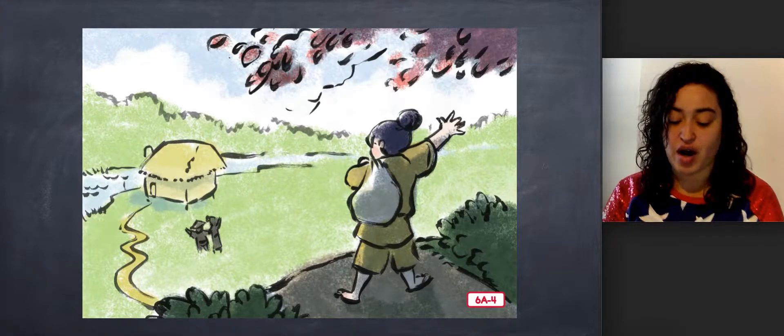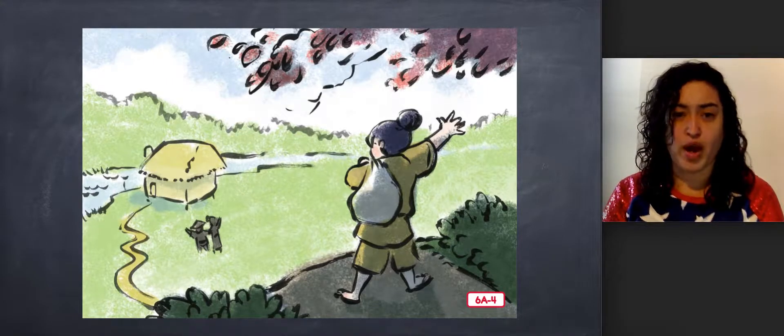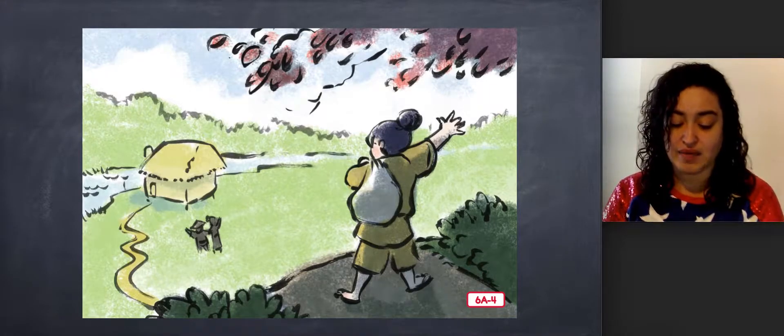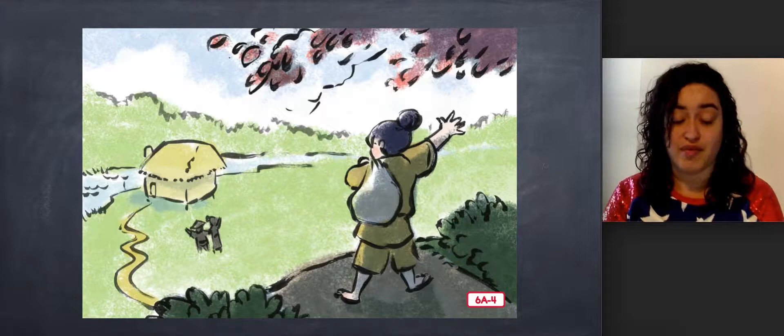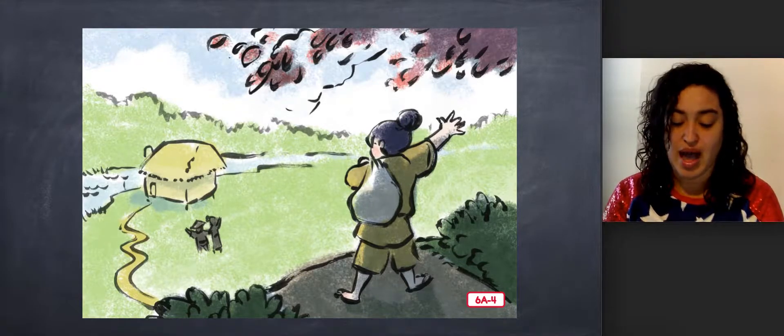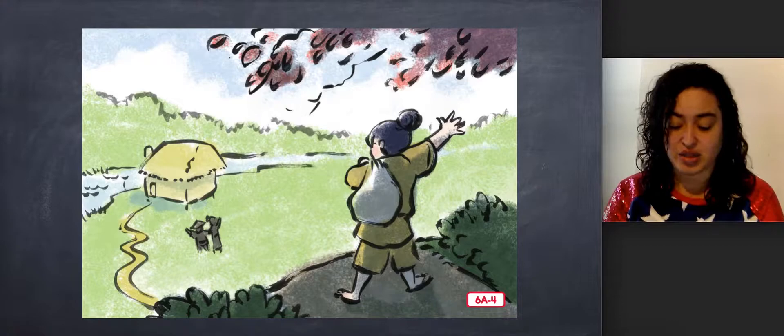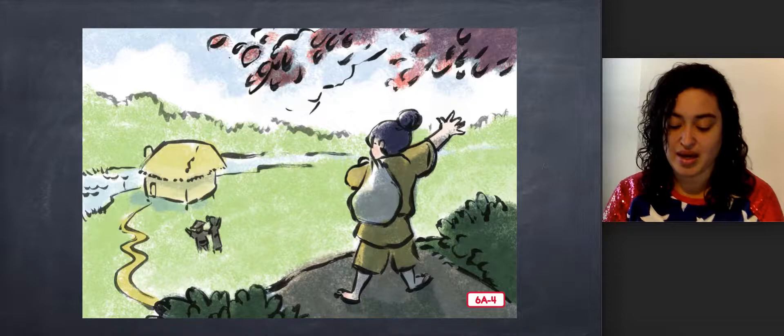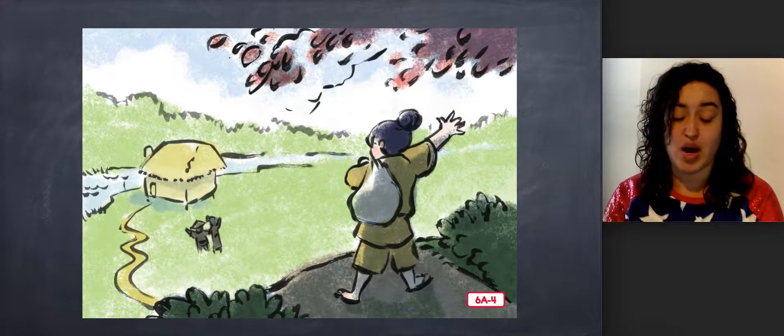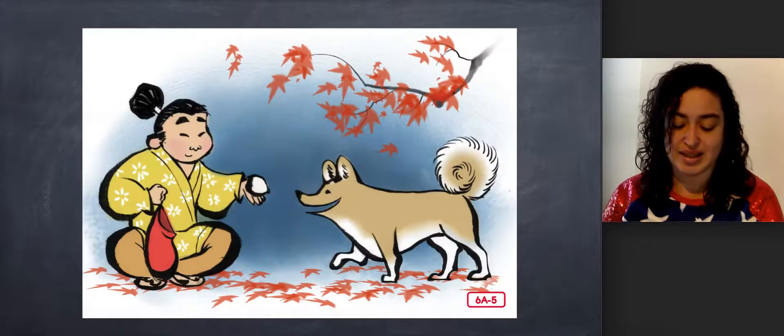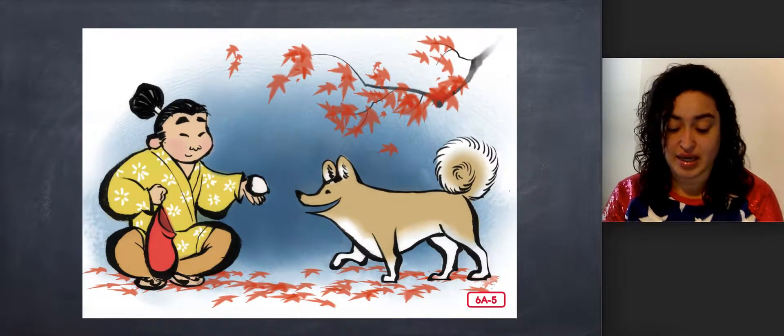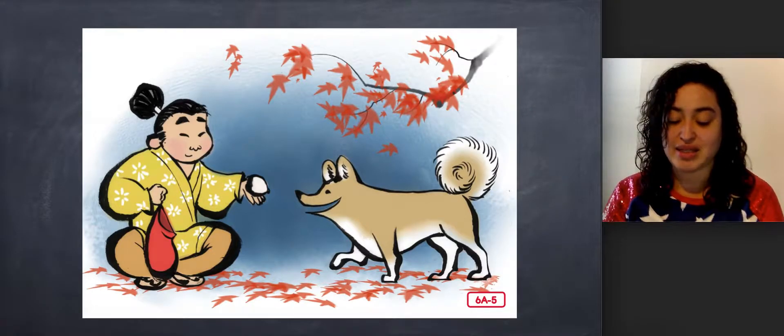He had not gone far when he met a dog. Where are you going, Momotaro? asked the dog. I'm going to the island of the oni to bring back what they have stolen from my village, said Momotaro. And what are you carrying in that sack? asked the dog. I'm carrying the best millet cakes in all Japan, said Momotaro. Would you like one? Yes, said the dog. And I will come with you to the island of the oni. I will help you. The dog ate the millet cake. Then he and Momotaro walked on.